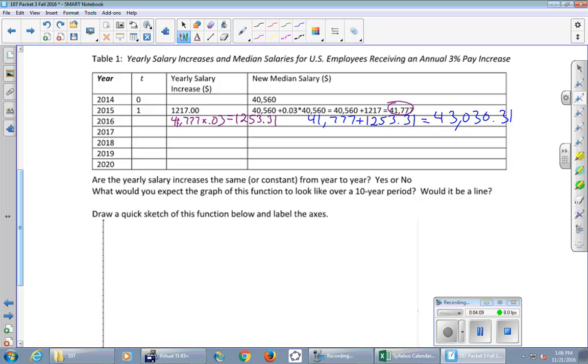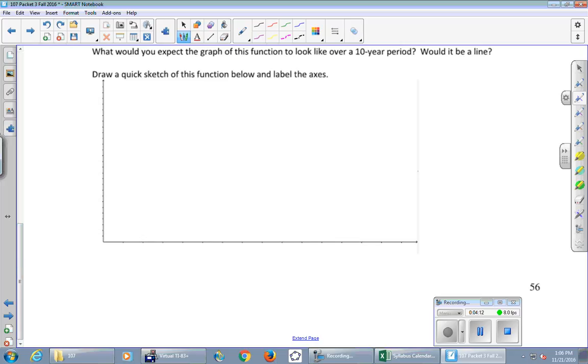You don't need to sketch this thing down here, but if this was time and this was the overall salary including your raise. So let's say that at zero we had what was the salary, forty five sixty. If it was going to be a constant increase in salary, and one year later you'd make another twelve hundred, and another year after that you'd make another twelve hundred, and another year after that you'd make another twelve hundred. And what kind of a graph would we get? It's a line, a linear graph.